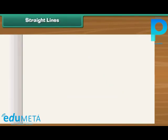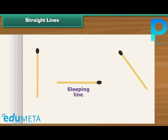Straight lines: place some matchsticks on a sheet of paper. There are three ways of placing the matchsticks — horizontal, vertical, and slanting. Horizontal matchsticks make sleeping lines. Vertical matchsticks make standing lines. Slanting matchsticks make slanting lines.